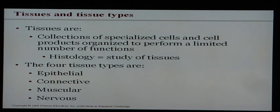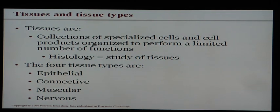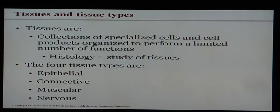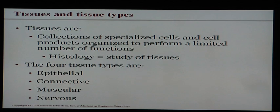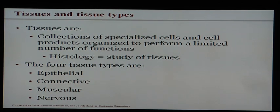Tissues are collections of specialized cells that are organized to perform a limited number of functions. This means the cells become really good at specific tasks. For example, cardiac muscle cells become specialized for contraction to help the heart beat. Histology is the study of tissues, so a histologist would be a scientist studying the tissues and what's going on inside them.